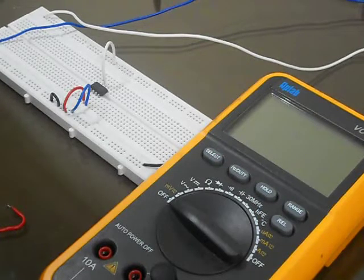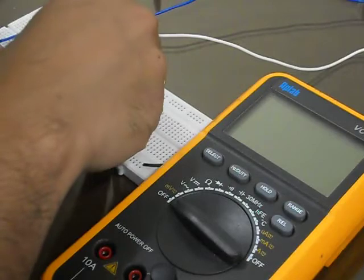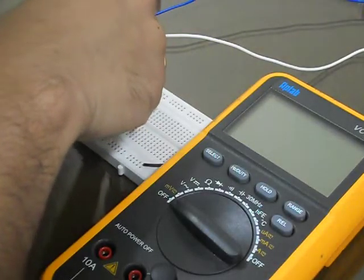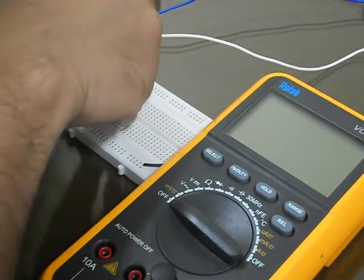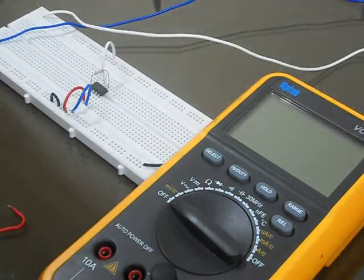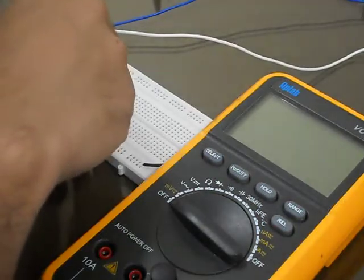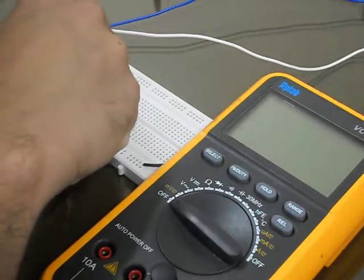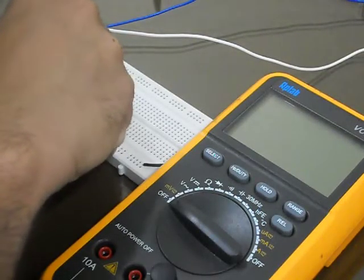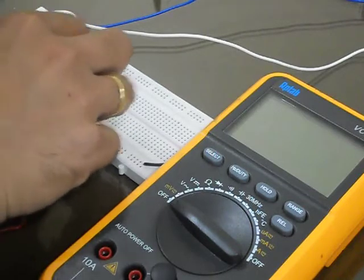For the negative feedback amplifier, the feedback resistor I am choosing is 100 kilohms between pin 6 and pin 2. Pin 6 is the output, pin 2 is the inverting input. Then between pin 2 and ground I am putting a 100 ohm resistor. That will make a 1000-gain negative feedback amplifier.